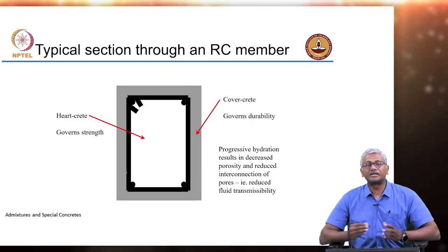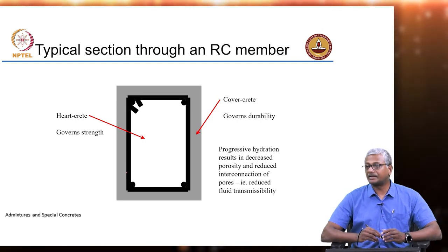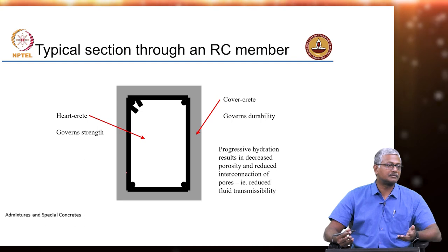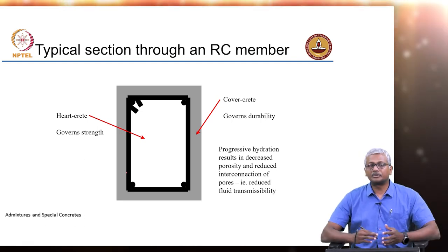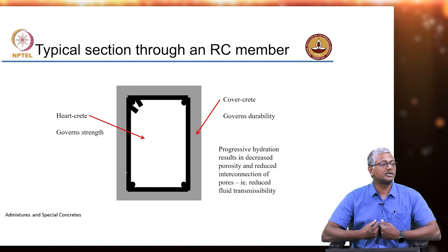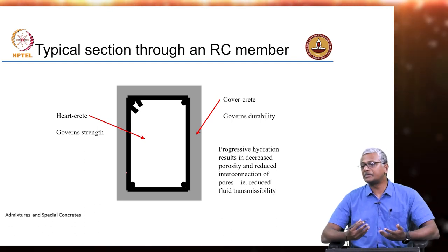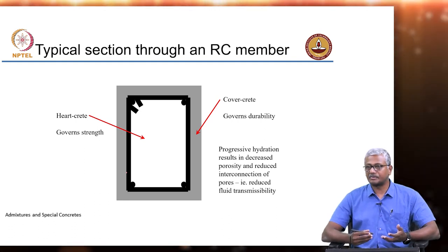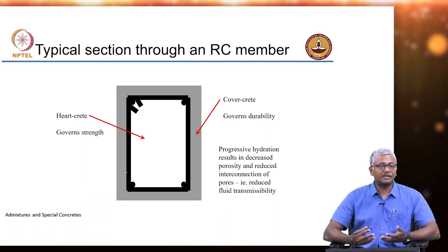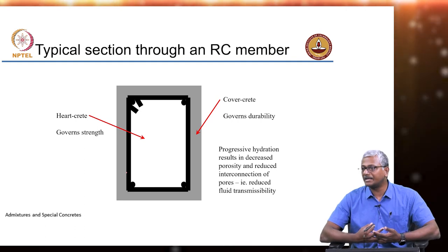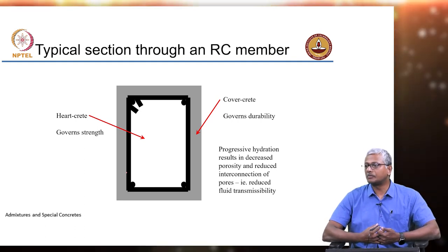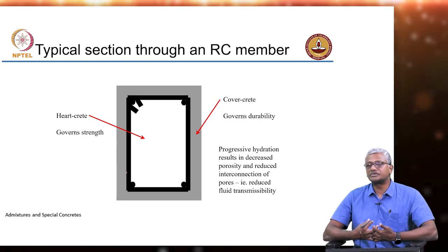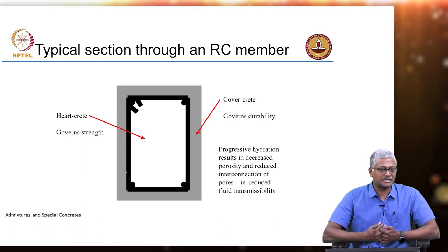If you think about a typical reinforced concrete member like a reinforced concrete column, which is primarily working from the principles of compression — the concrete is contributing significantly to the overall compressive load carrying capacity of the column. The steel also contributes to some extent, but more likely the steel is there to help with any bending that may happen because of eccentricity of the load. If the load is completely axial, it is obviously the concrete which is bearing most of the compressive load.